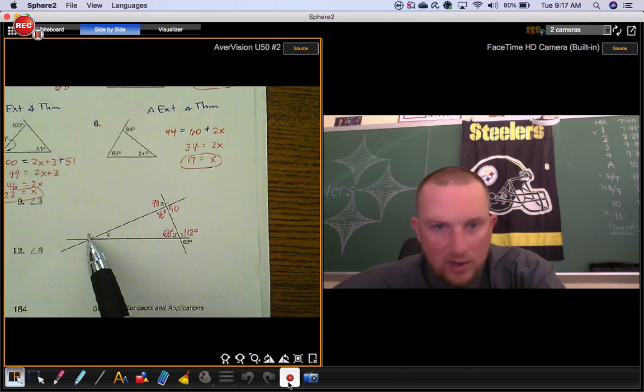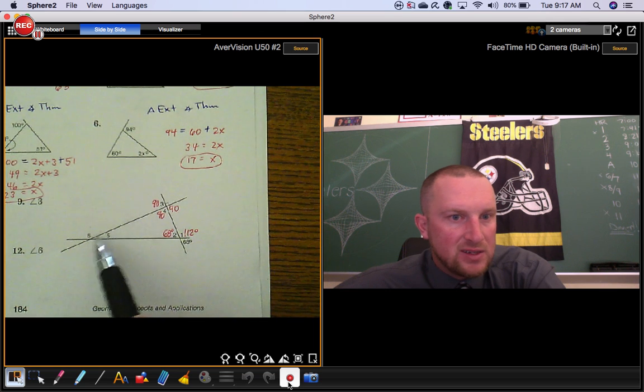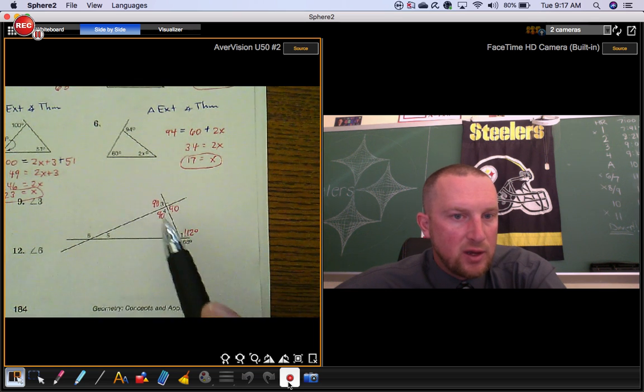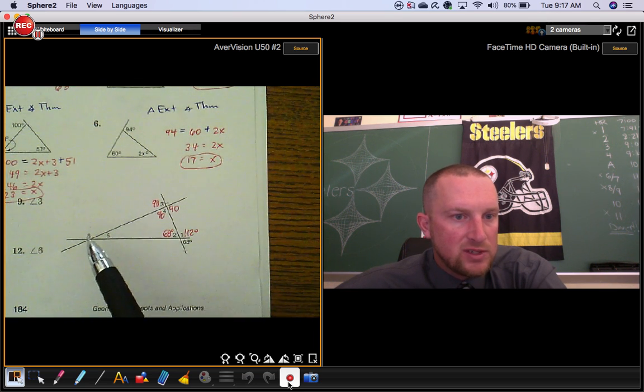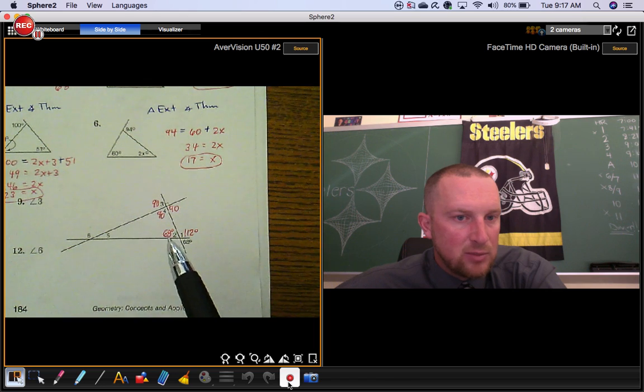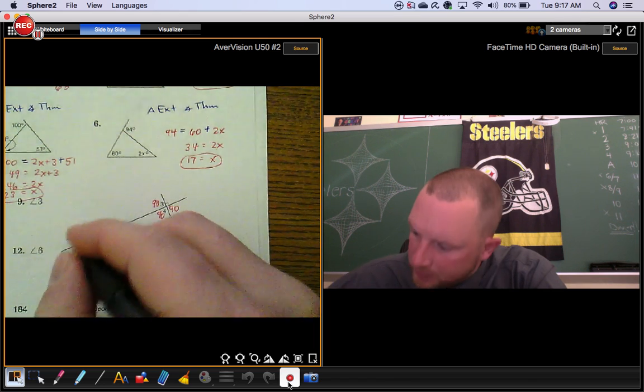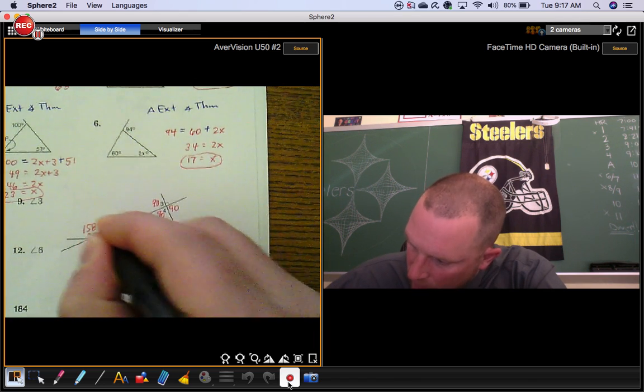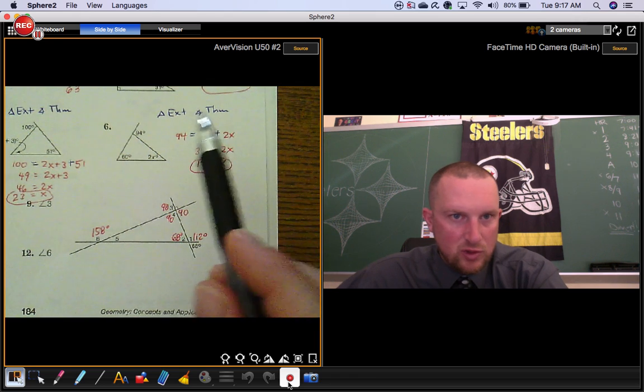Right, so let's start with angle 6. Angle 6 is an exterior angle for this triangle. Angle 6 is going to be the same thing as 90 plus 68, which would be 158. That's using the triangle exterior angle theorem.